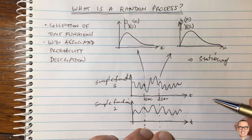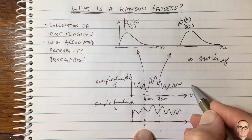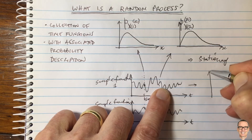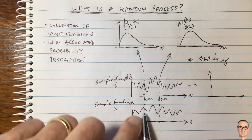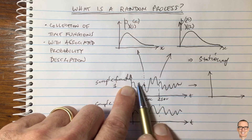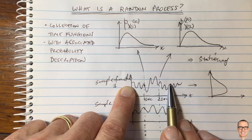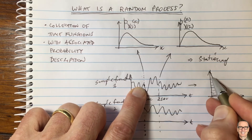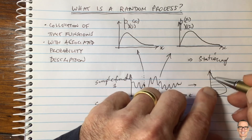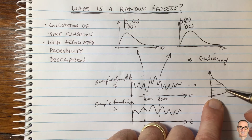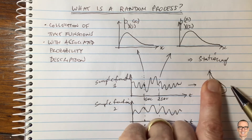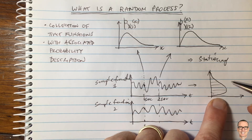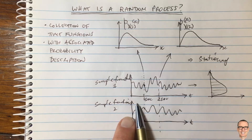One last concept is called ergodicity. Here we've looked down across all sample functions. Now let's look for each individual sample function. If we take sample function 1 and plot its histogram — the percentage of time each amplitude value occurs — then this histogram, flipped 90 degrees, is the PDF. So for each sample function we get a histogram showing how often each value happens.